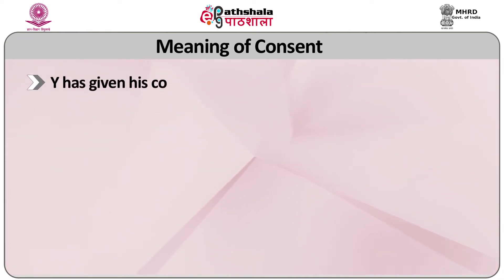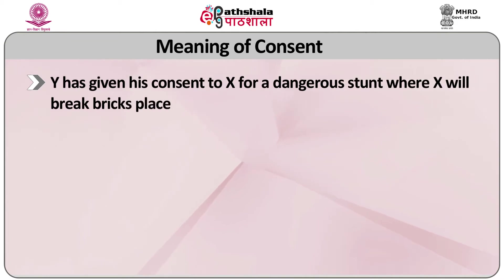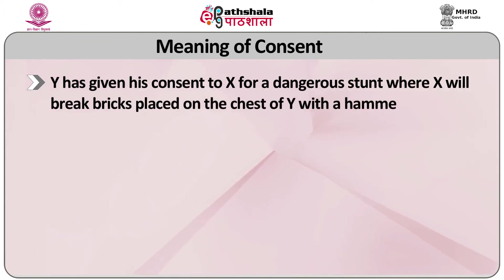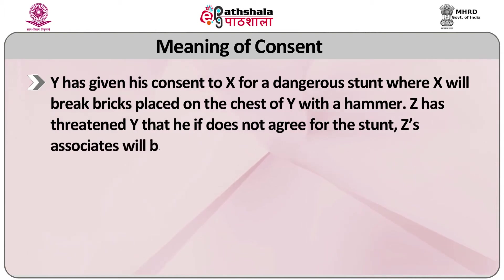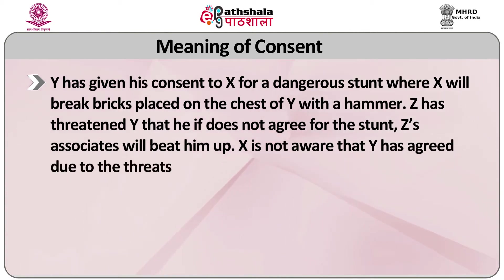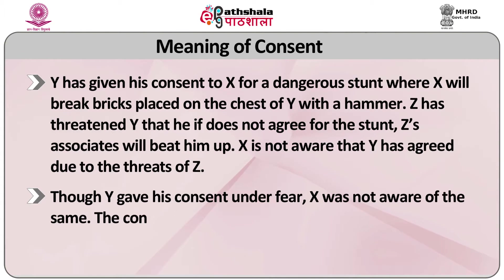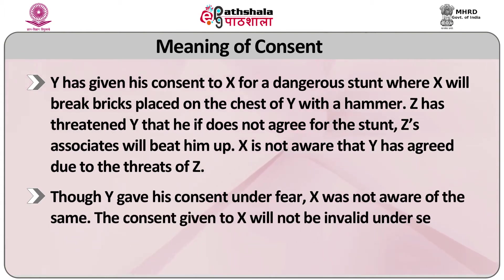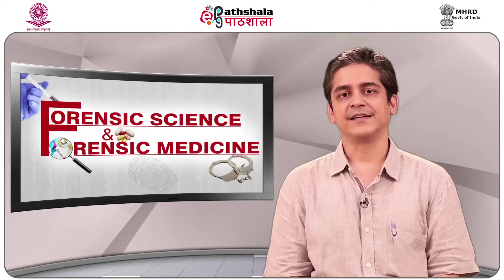Now if we change the facts a bit, let's consider another example. Y has given his consent to X for a dangerous stunt where X will break bricks placed on the chest of Y with a hammer. Z has threatened Y that if he does not agree for the stunt, Z's associates will beat him up. X is not aware that Y has agreed due to the threats of Z. Though Y gave his consent under fear, X was not aware of the scene. The consent given to X will not be invalid under Section 90 and it will count as a valid consent.